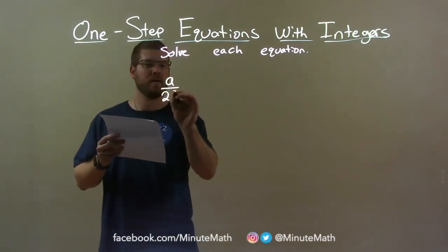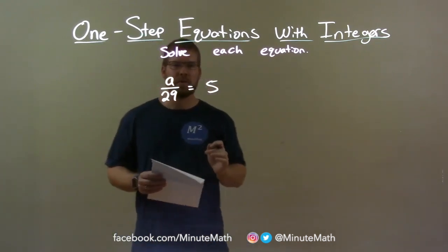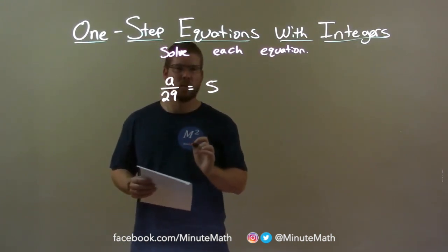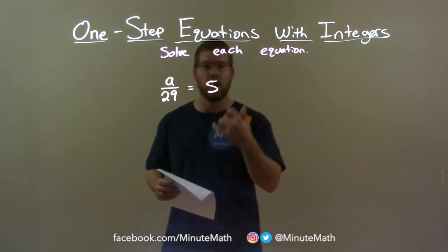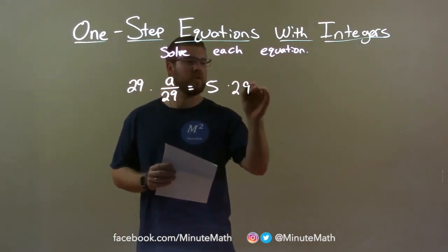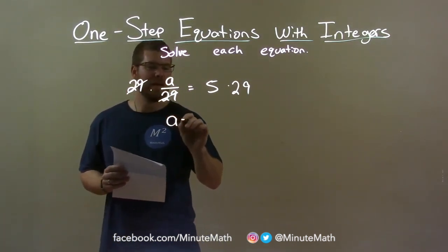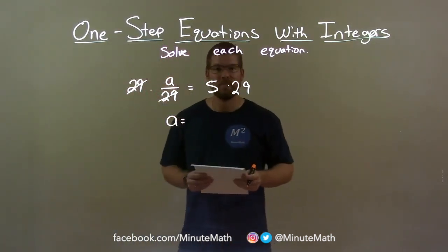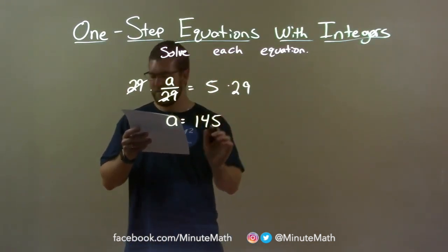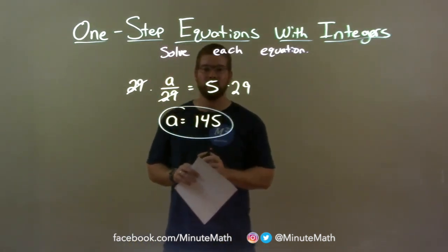a over 29 equals 5. I want to get a by itself — it's being divided by 29. To get the 29 to the other side, I need to multiply both sides by 29. Multiplication is the opposite of division. This cancels the 29s, giving me a by itself. Now I have 5 times 29, which is 145. So our final answer is a equals 145.